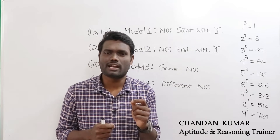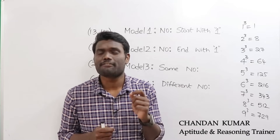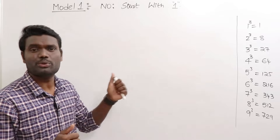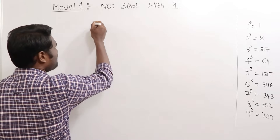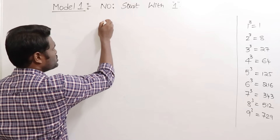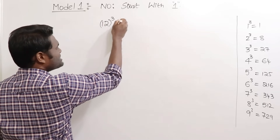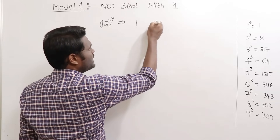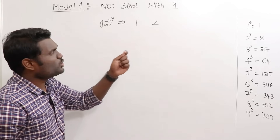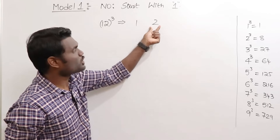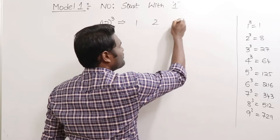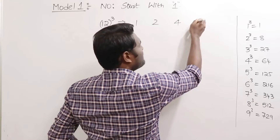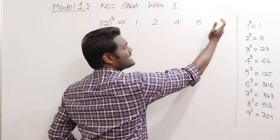Watch this video till the end and I promise you'll be calculating cubes in just a fraction of two seconds. Let's look at Model 1 — numbers starting with one. Example: 12 cubed. Write the same digits: 1 and 2. Then find the square of the second number: 2 squared is 4. Next, the cube of the second number: 2 cubed is 8.